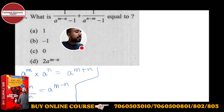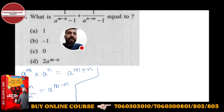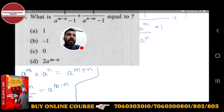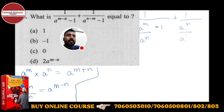Okay, let's go. You have to solve this completely. See now, how will we do it? If you know this property, you can write 1 upon a^(m−n) as a^m upon a^n. Then minus 1 plus 1 upon a^(n−m), which is a^n upon a^m, minus 1. Okay.